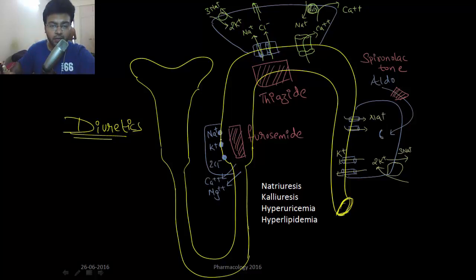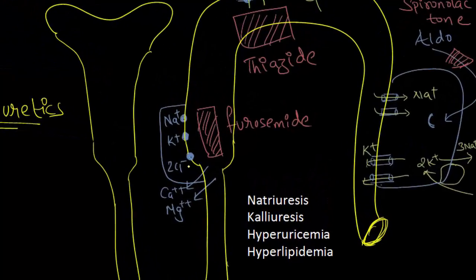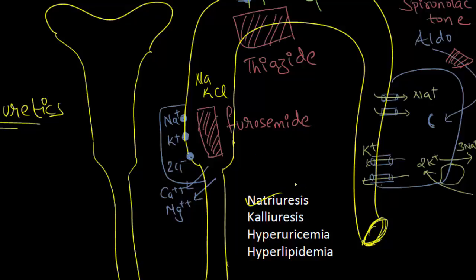In the thick ascending loop of Henle, we have sodium-potassium-2-chloride symport, which is blocked by furosemide. So if this is blocked, there will be no more absorption of sodium, potassium and chloride. If there is no absorption of sodium, it will cause natriuresis. And this natriuresis pulls water along with it, it will produce diuresis also.